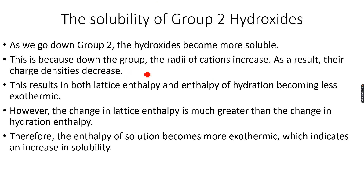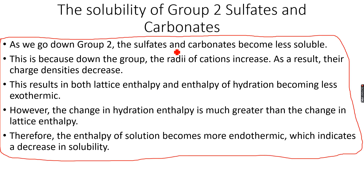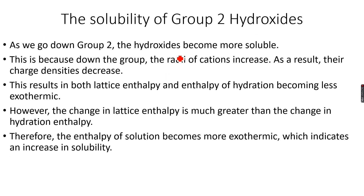Going down the group, cation radii increase and charge densities decrease, causing both lattice enthalpy and enthalpy of hydration to become less exothermic — same as before. However, for hydroxides, the change in lattice enthalpy is much greater than the change in hydration enthalpy. This is the opposite of sulfates and carbonates. The reason is that OH⁻ ions are very small, so the opposite trend occurs: the change in lattice enthalpy dominates over the change in hydration enthalpy.